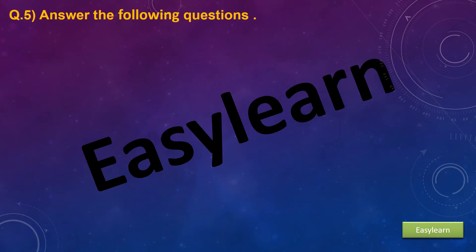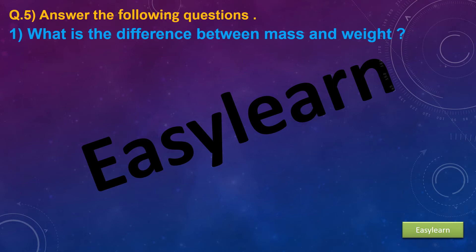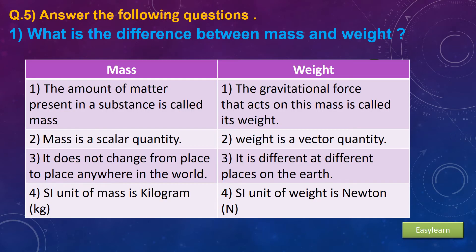Answer the following questions. First, what is the difference between mass and weight? Mass: The amount of matter present in a substance is called mass. Weight: The gravitational force that acts on this mass is called its weight.